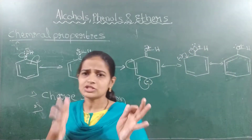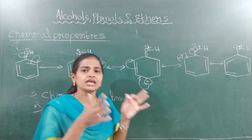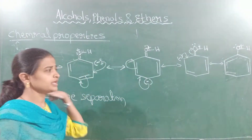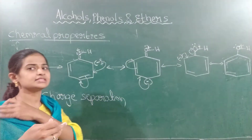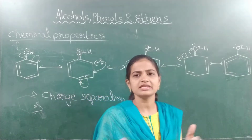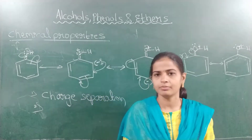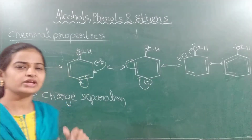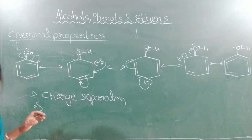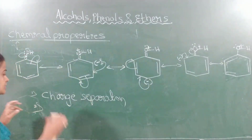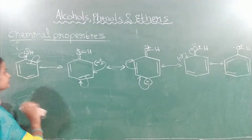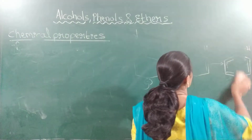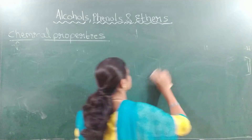These two reasons have destabilized phenol. As phenol is destabilized, it releases the proton to become the phenate ion. Now we will try to write the resonance structures of the phenate ion.